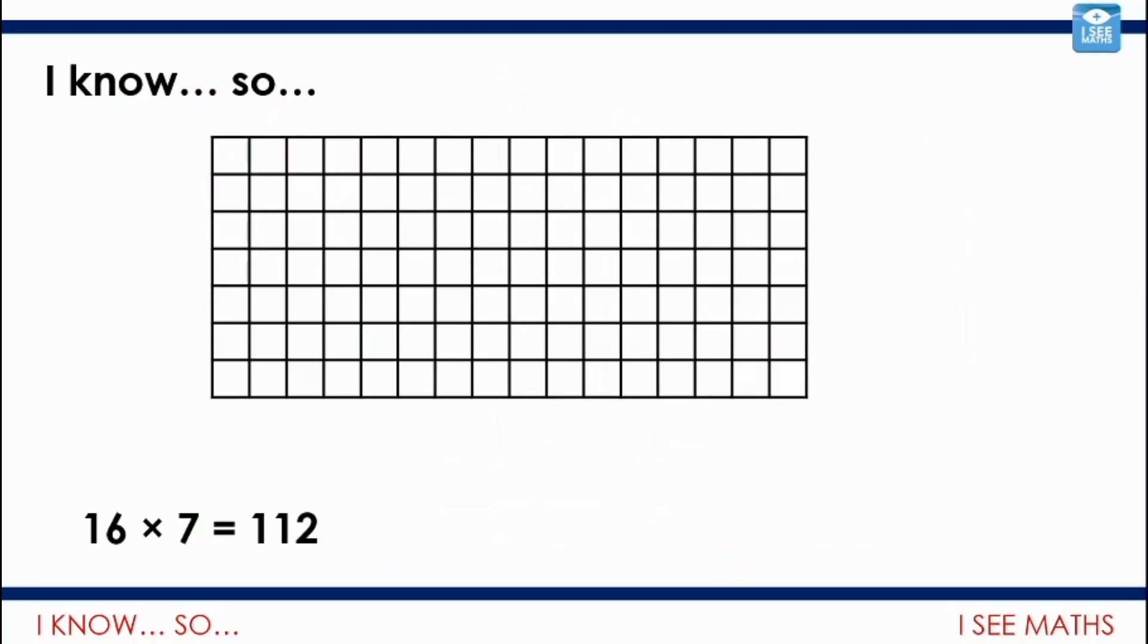Now, have a look at this. I call this, I know so. And it's when you know one multiplication fact and you can use it to work out another one. So, let's say 16 multiplied by 7 is 112. So, you'll have to trust me on this one. 16 squares along the top. 7 sets of 16. There's 112 squares in total.